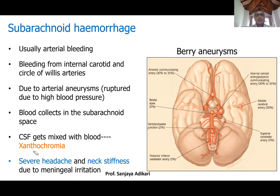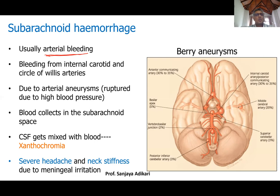Subarachnoid hemorrhage is bleeding into the subarachnoid space. Unlike subdural hemorrhage, it is usually arterial bleeding. Most cases are not due to injury alone but to rupture of an aneurysm of an artery — specifically, berry aneurysms — which is why it becomes arterial bleeding.